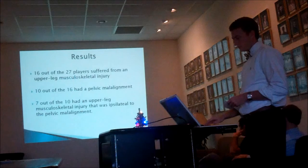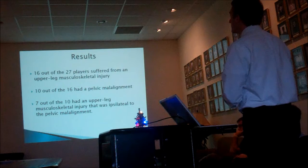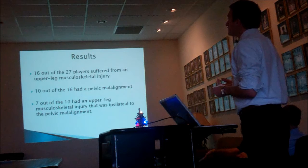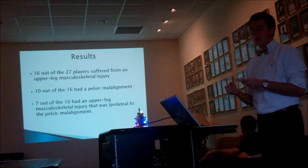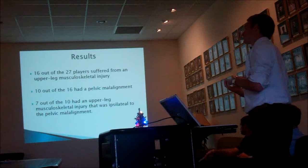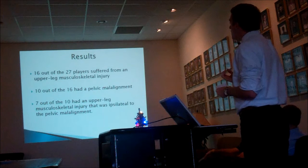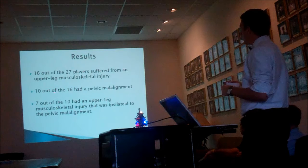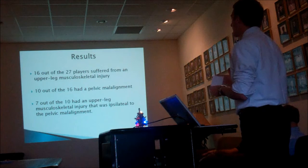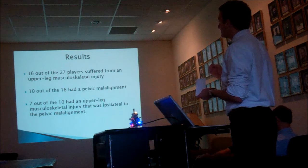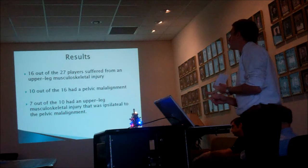For my results, 16 of the 27 players suffered from an upper leg muscular injury — 59% of the soccer team. Of those 16, 10 had a pelvic malalignment, which was 63%. Of those 10, 7 had an upper leg muscular injury on the same side as their pelvic malalignment. Of the 6 who did not have a pelvic malalignment, 3 had a specific mechanism of injury, which ruled them out for further analysis. Of the 10 with pelvic malalignment, 9 were posteriorly rotated and 1 was anteriorly rotated.